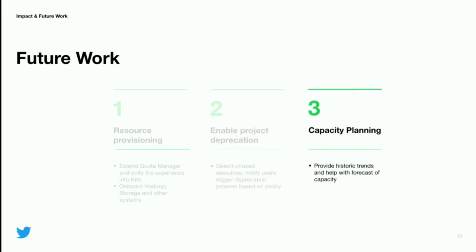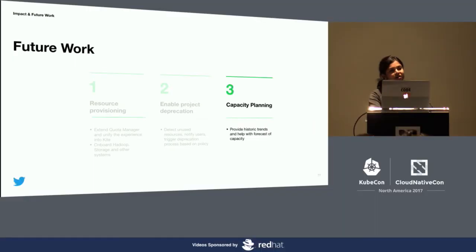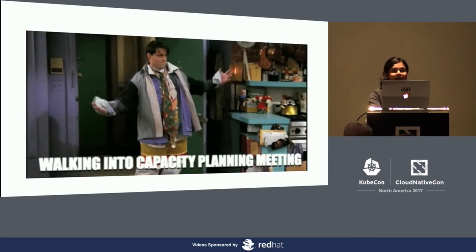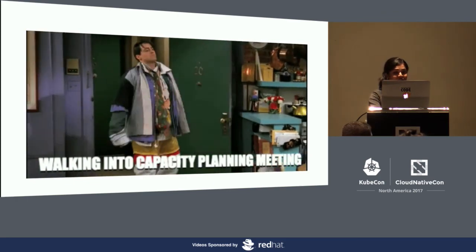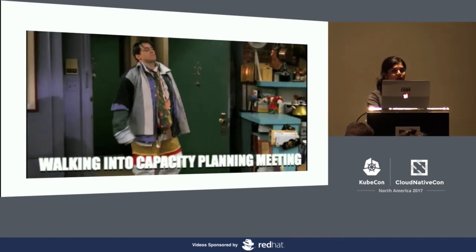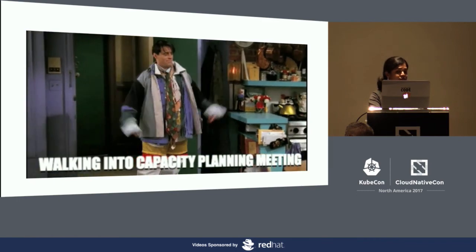Last but not least, capacity planning. Every time there are conversations about capacity planning, requests are collected with a top-down approach. Service owners usually add extra headroom along with their actual request. As this request travels down to the infrastructure owners, all those extra headroom requests added up at each layer — not to mention the extra headroom added by infrastructure service owners themselves — leads to over-provisioning and over-requesting of resources.